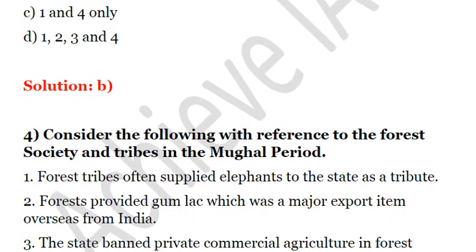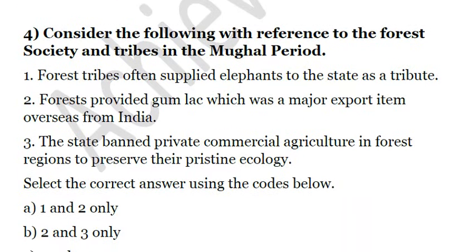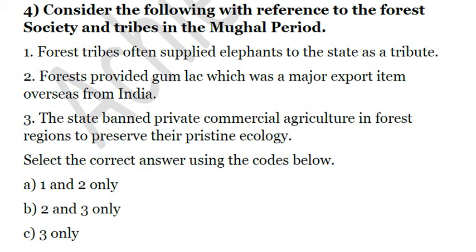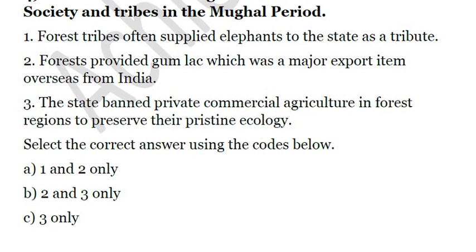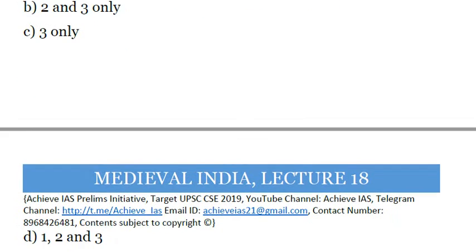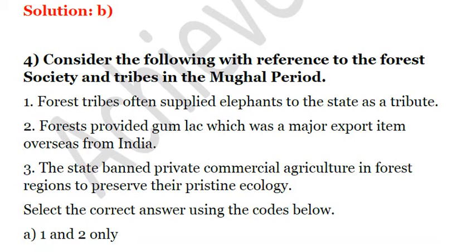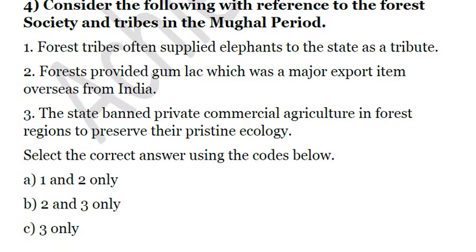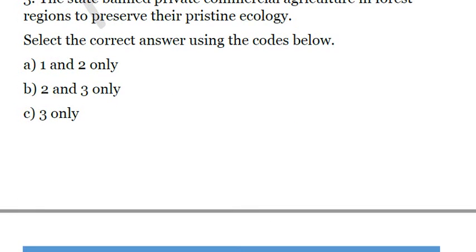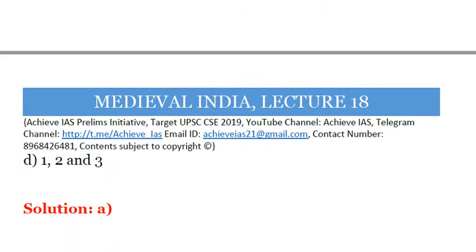The next question: consider the following with reference to forest society and tribes in the Mughal period. First, forest tribes often supplied elephants to the state as a tribute. Second, forests provided gum lac, which was a major export item overseas from India. Third, the state banned private commercial agriculture in forest regions to preserve their pristine ecology. The first two statements are correct — forest tribes did supply elephants as tribute, and forests did provide gum lac as a major export. But the third statement is not correct. The answer is A: one and two only.